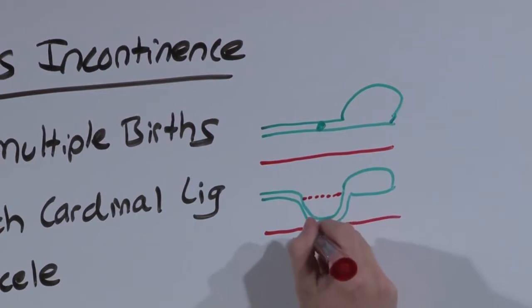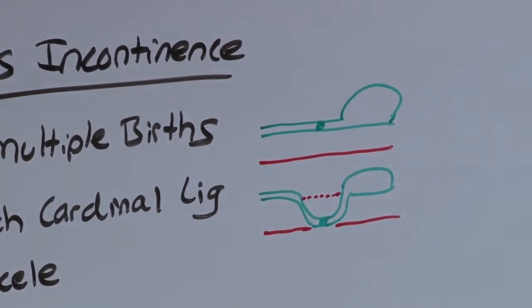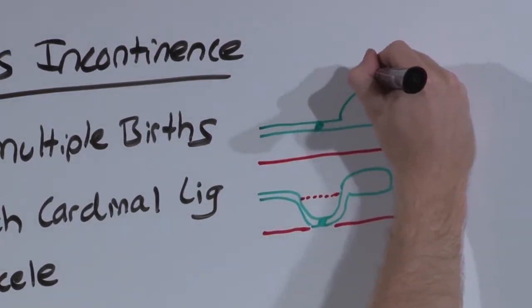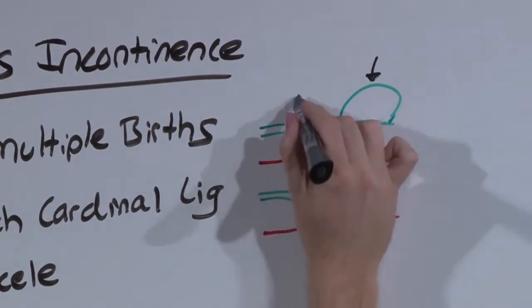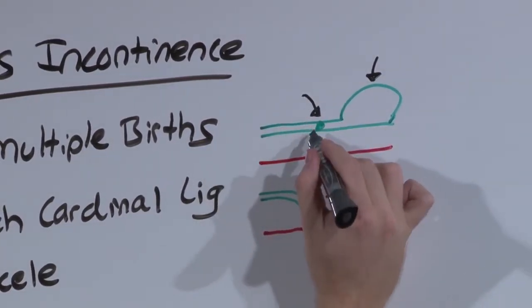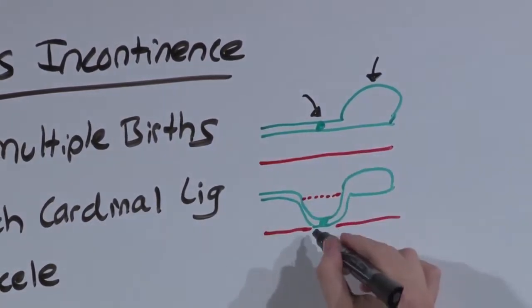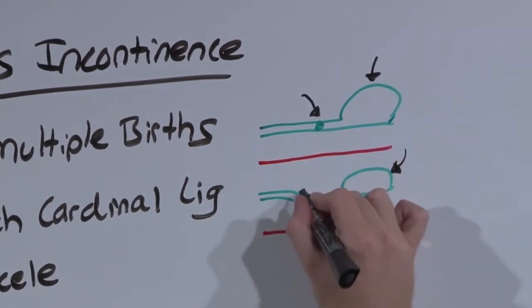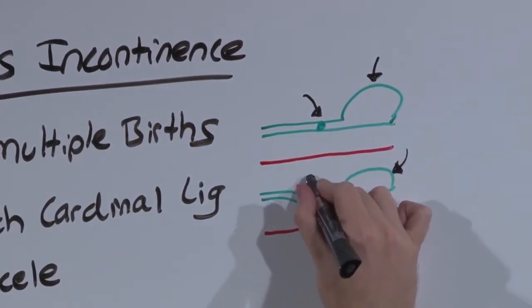So high grade cystocele drops the sphincter into the vagina. In a normal patient, abdominal pressure is translated to the bladder and to the sphincter, such that the sphincter closes. Now with the cystocele, that abdominal pressure is translated to the bladder, but not to the sphincter.